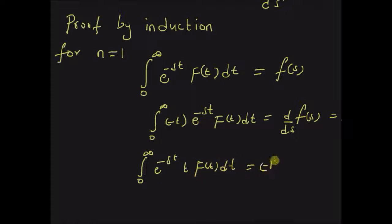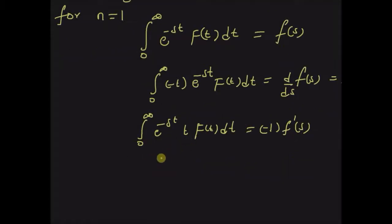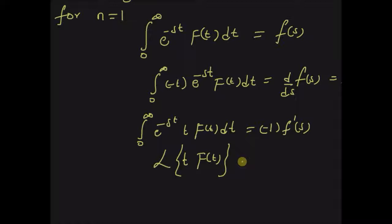This is equal to (-1) · F'(s). This equation implies that the Laplace transform of t times f(t) is equal to (-1) · F'(s), which proves the theorem for n equal to one.